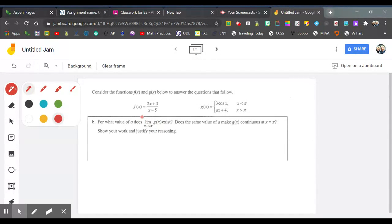So the first part says, what value of A does the limit as X approaches π for G of X exist? So limit, that means the limit from the left must equal the limit from the right.